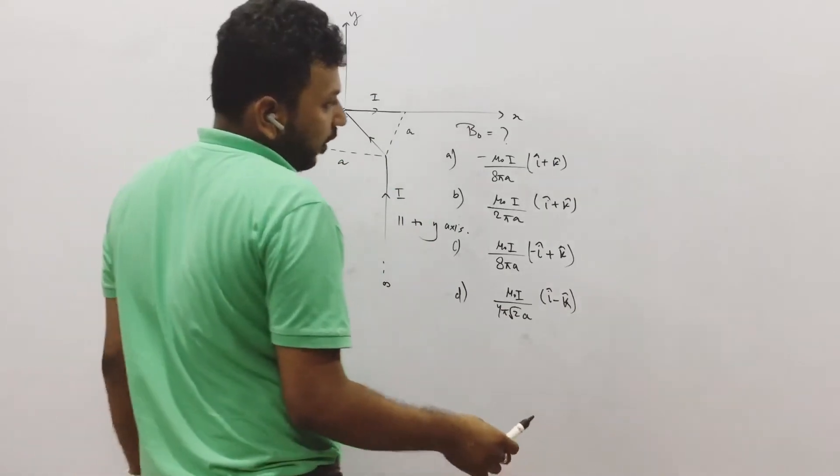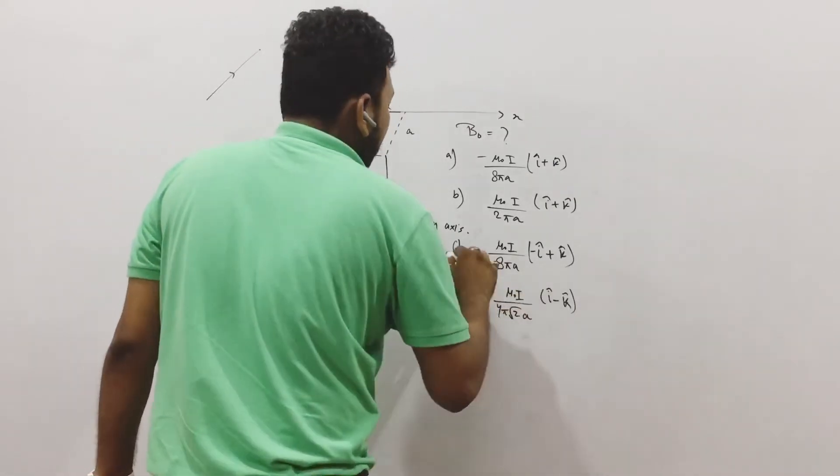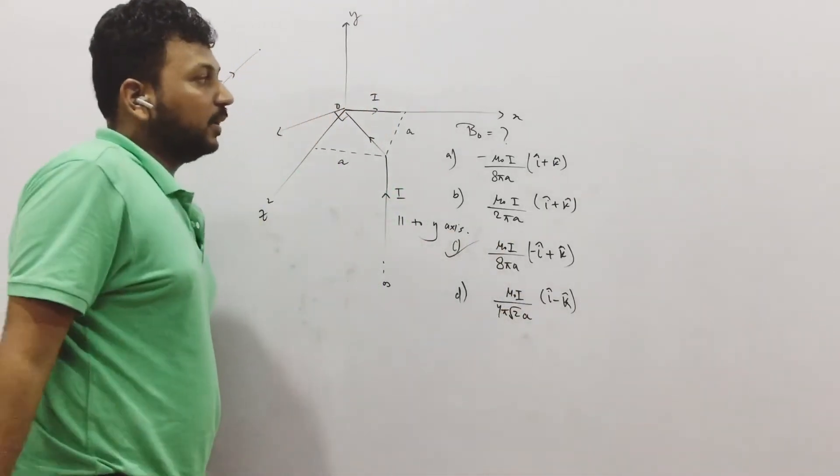So from that we have only one option, I think, minus i plus k, this option. So that sort of thing gets cancelled.